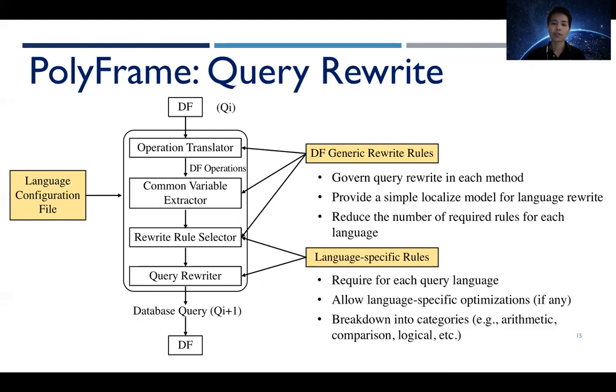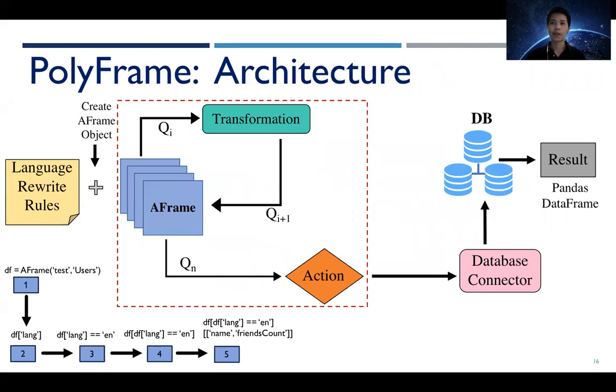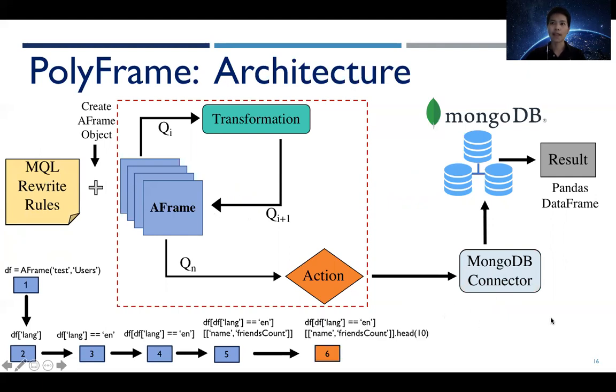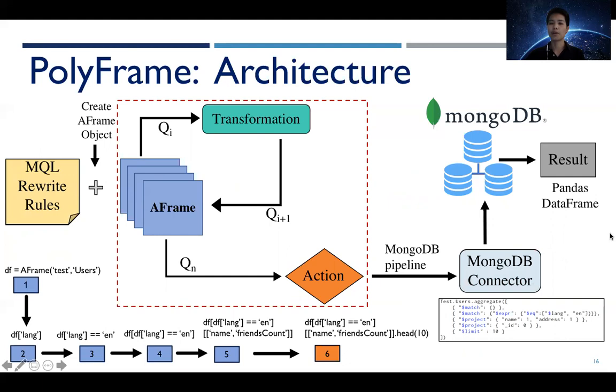The language-specific rules are required for each query language. We provide a template for language mapping that is broken down into categories such as arithmetic operators, comparison operators, and so on. For example, if you would like to operate on a MongoDB instance, you would use our MongoDB connector or provide your own socket connection to a MongoDB instance. You would also select our MQL language rewrite rules. Then, when an action happens, the underlying MongoDB pipeline that PolyFrame generates will be sent over to a MongoDB for execution.